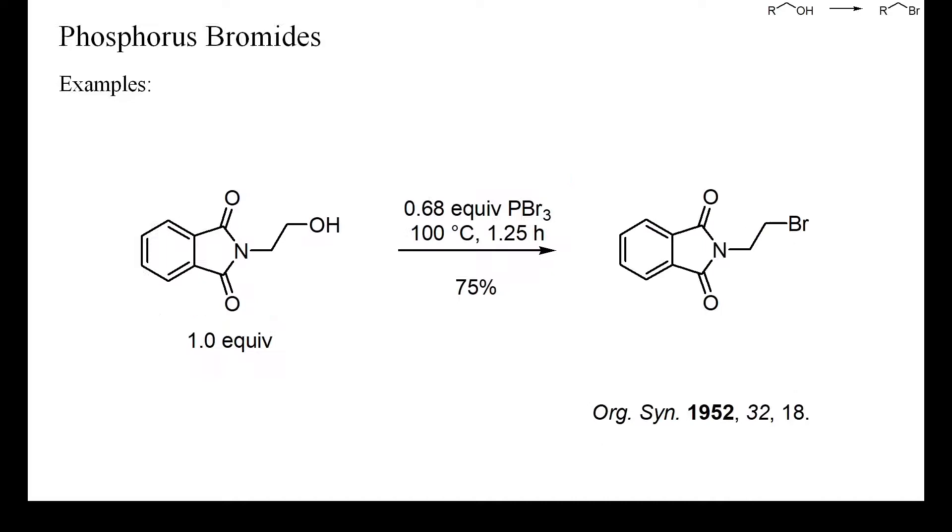In this example, an acid-resistant alcohol was converted into the corresponding bromide by treatment with less than one equivalent of phosphorus tribromide, without any base or solvent. The product was isolated by dilution with water, filtration and recrystallization from ethanol.